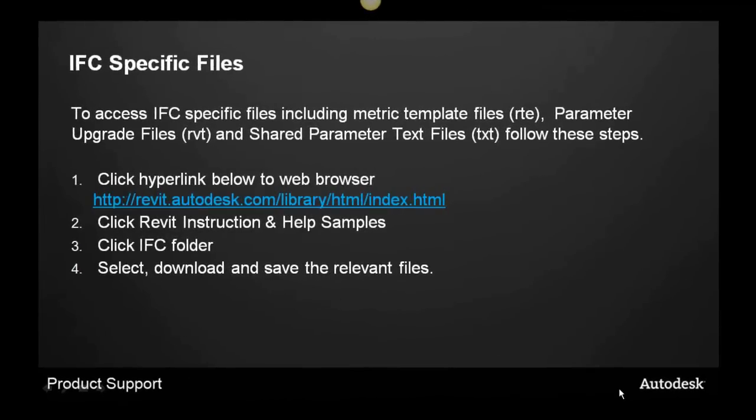To access IFC specific files, including metric template files, parameter upgrade files, and shared parameter text files, follow these steps: Click on the hyperlink below to the web browser. Next, click on Revit instruction and help samples. Then click on the IFC folder and finally select download and save the relevant files.